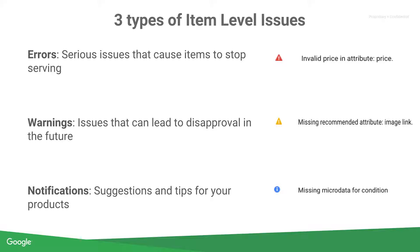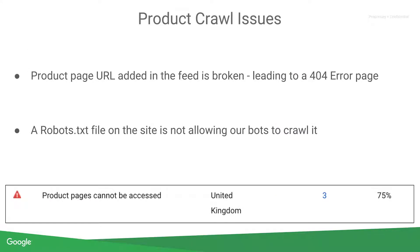Let's start by talking about product crawl issues. If you see disapprovals in your account stating that we can't crawl some of your products, it's usually because of broken URL links that lead to 404 error pages. You can resolve this by checking your product page URLs and ensuring that they all lead to functional pages. It could also be because you have roboted your page by adding a robots.txt file to your server and prohibited crawl access. This can be fixed by configuring the robots.txt file to allow our bots to crawl your website.